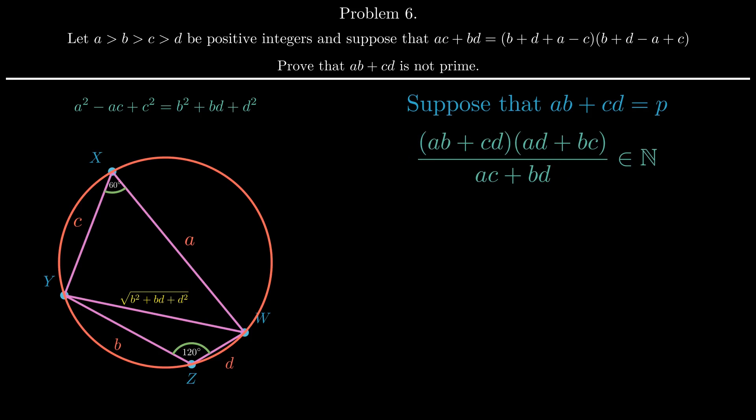It's easy to see that ab plus cd is greater than ac plus bd, let's call it x, which is greater than ad plus bc, which we'll call y. So we have that py over x is an integer. So, said differently, x divides py. Since p is prime and greater than x, we have that x divides y.